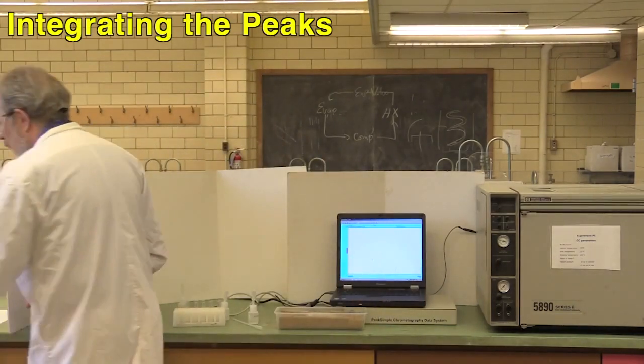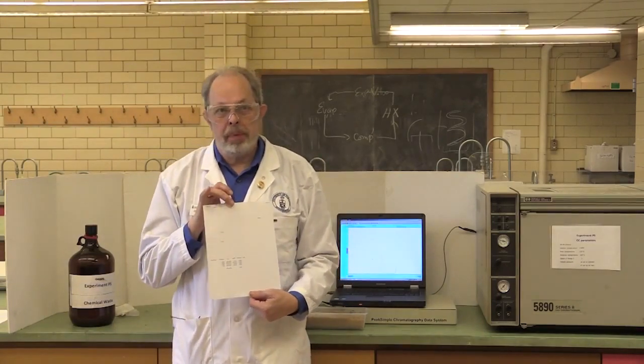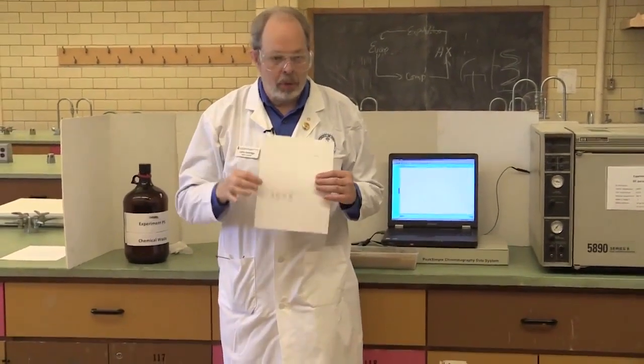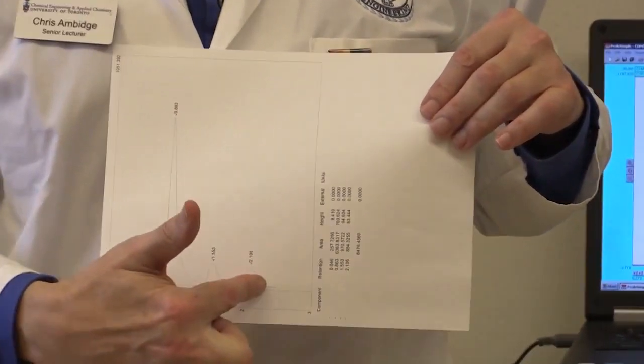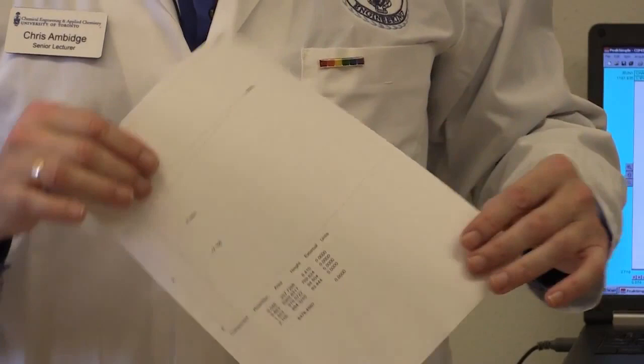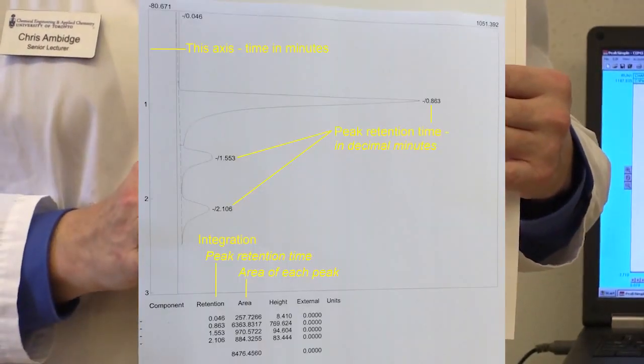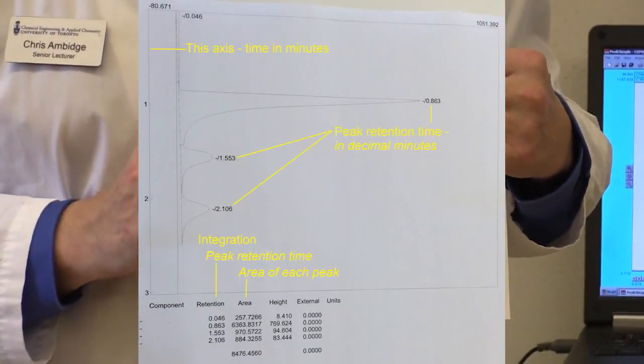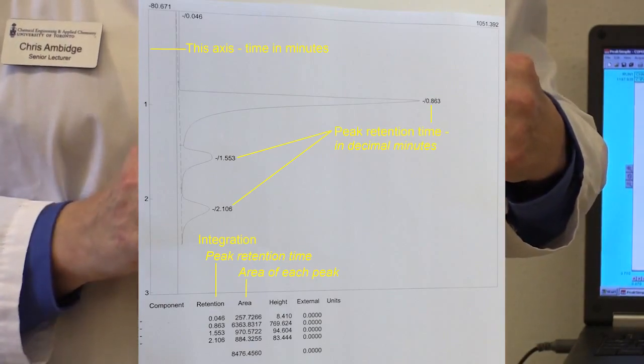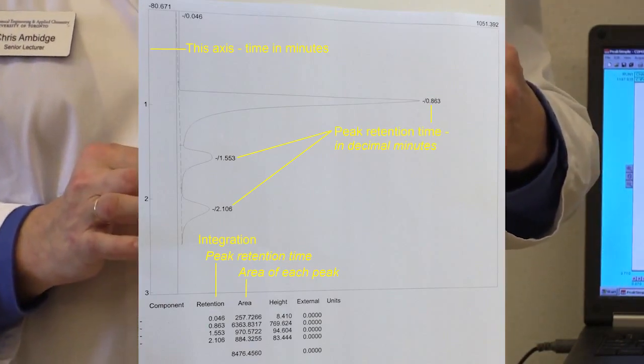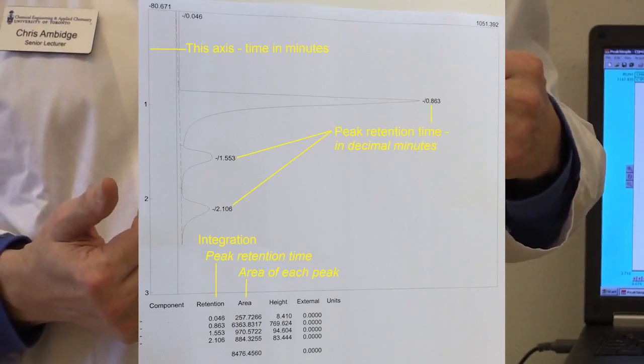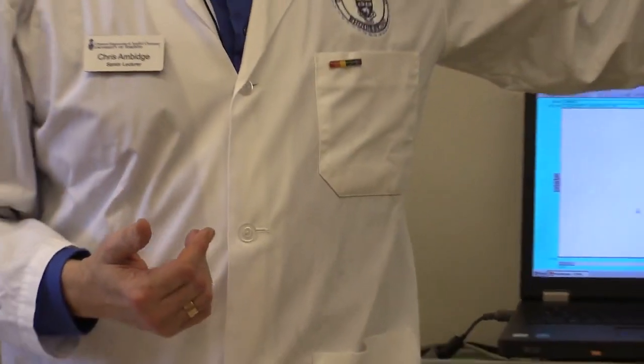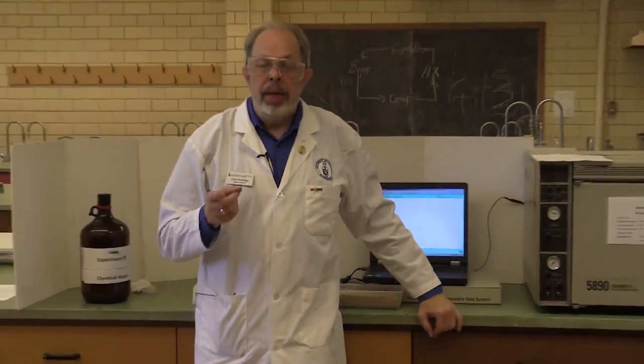Now from one that we've done earlier, your output will look something like this. Again, we'll insert a slide, but there are three peaks, notice. And they are time stamped. And the integration appears in the block underneath. They're identified in the left-hand column by time stamp. And the area in square units is in the second column. That's what you're going to have to make note of.